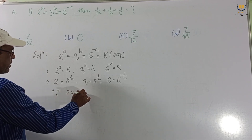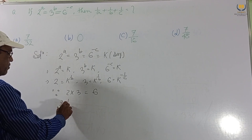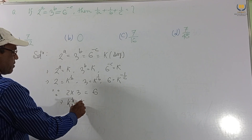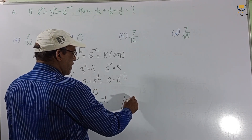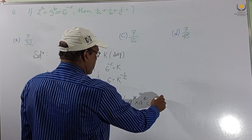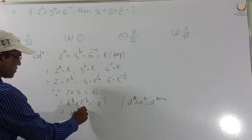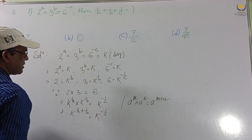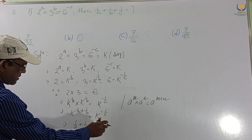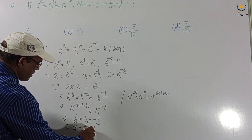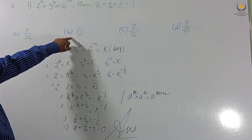Since 2 × 3 = 6, we substitute: k^(1/a) × k^(1/b) = k^(−1/c). Using the index formula a^m × a^n = a^(m+n), we get k^(1/a + 1/b) = k^(−1/c). This implies 1/a + 1/b = −1/c, so 1/a + 1/b + 1/c = 0. This is our final answer. Option B is correct. Very easy solution!